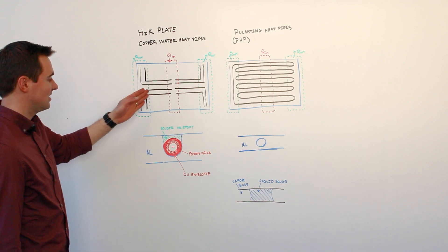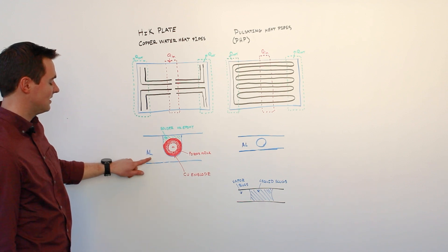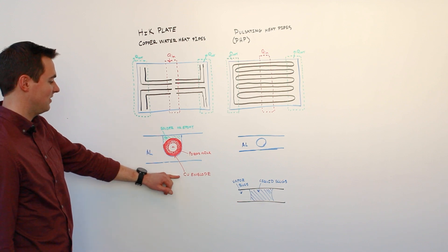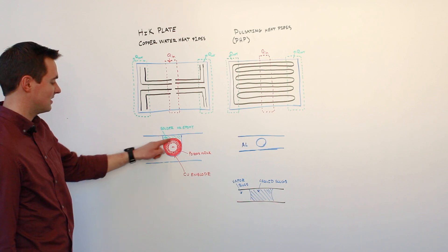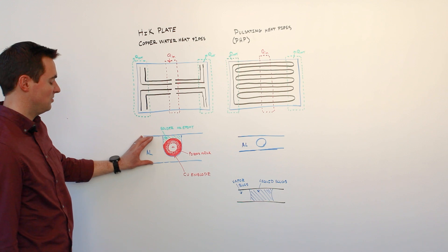If we look at a cross section, what you would see is that we would typically have an aluminum plate with an embedded copper heat pipe which is comprised of a copper envelope with a porous copper wick structure. That typically is soldered or epoxied into the plate.